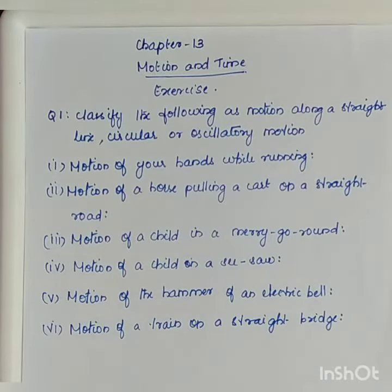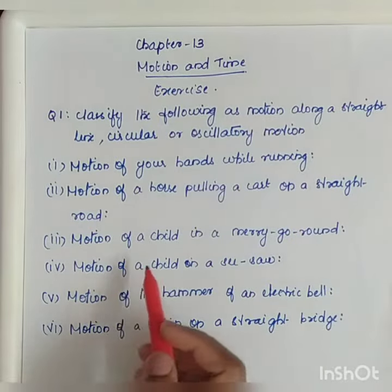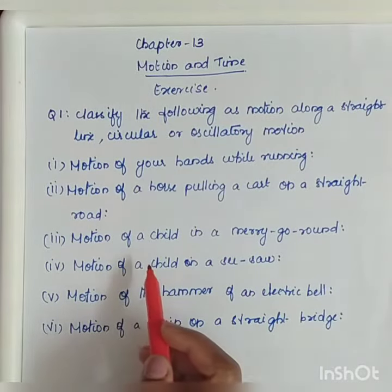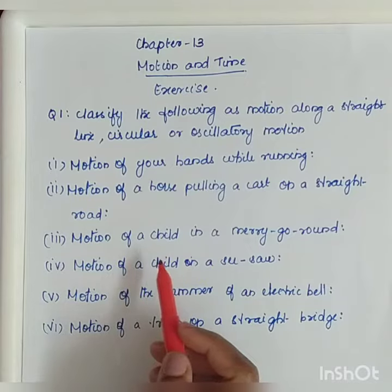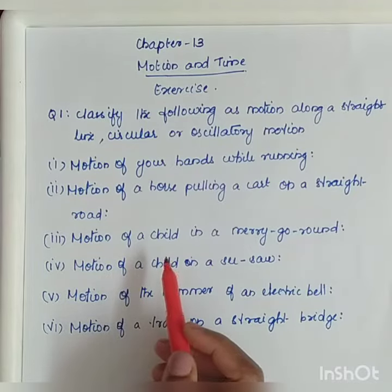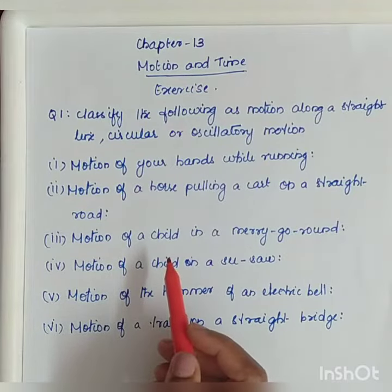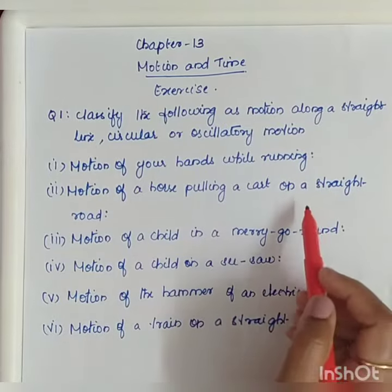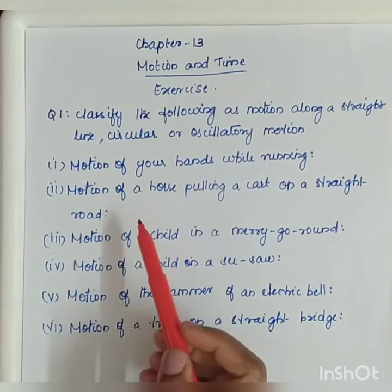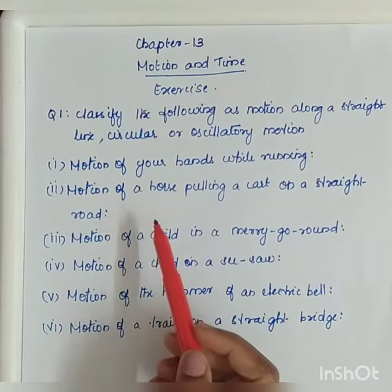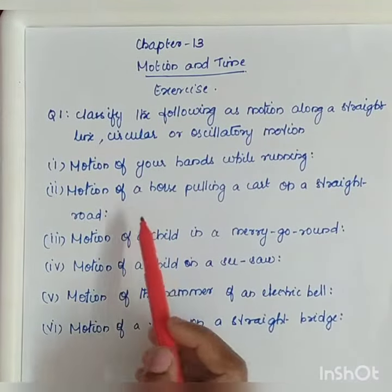Next, let's see the next question that is from chapter 13, question number 1, motion and time. Classify the following as motion along a straight line, circular or oscillatory motion.